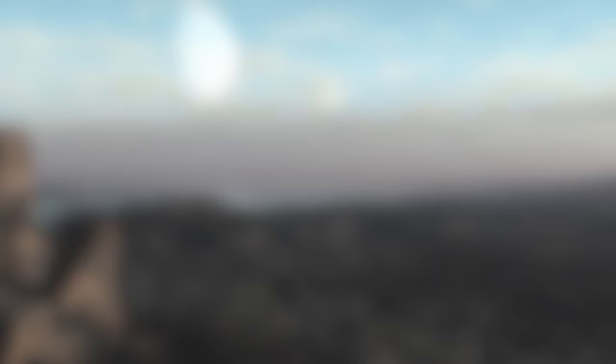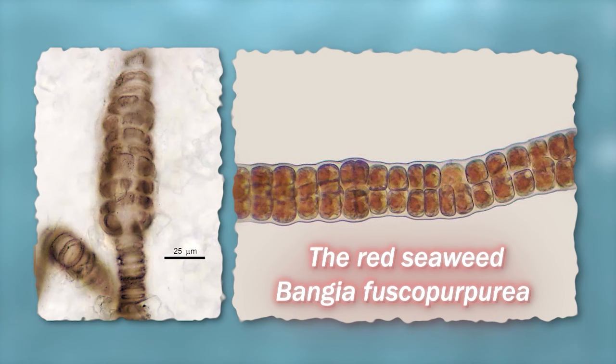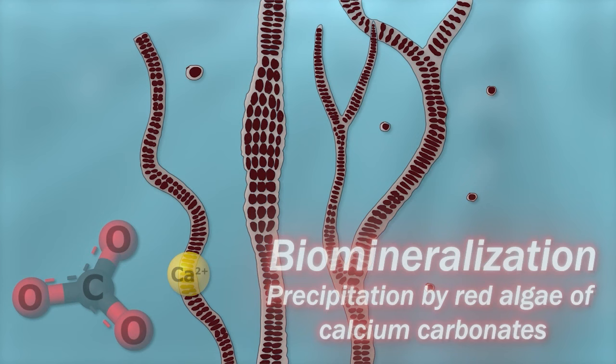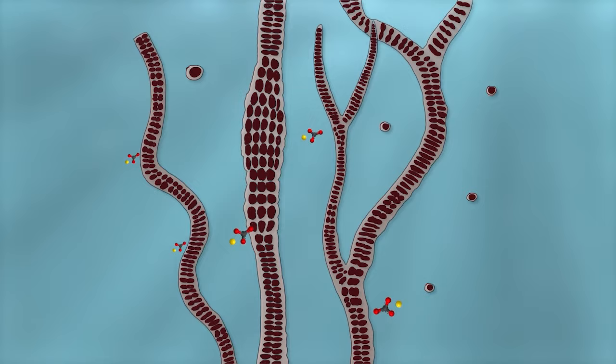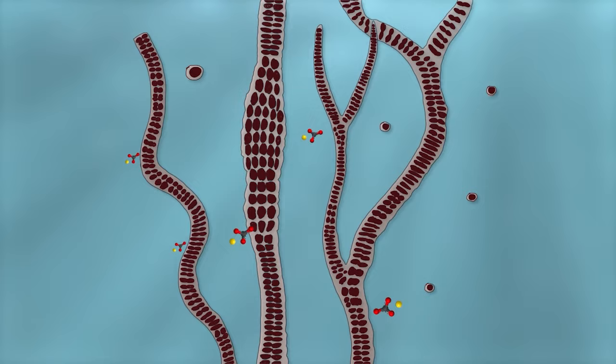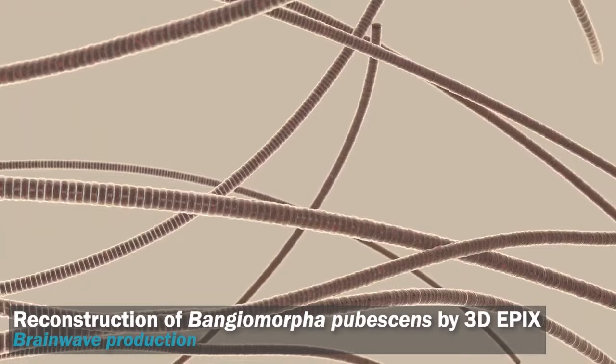Among these fossils was described the likely oldest fungi ever found — called Ourasphaira giraldae — but also the oldest algae ever known. This is the holotype of the multicellular red algae Bangiomorpha pubescens, featured by a very complex thallus that looks like the current Bangia algae. Bangiomorpha, like almost all red algae, can biomineralize calcium carbonates within the cell walls — a process that widely favored the fossilization of red algae through 1 billion years of life evolution.